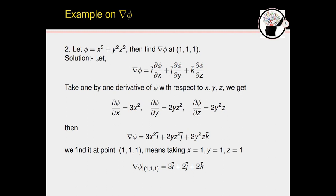Example 1: Let phi = x³ + y²z². Find the gradient of phi, i.e., del(phi), at point (1, 1, 1). We use del(phi) = i(∂phi/∂x) + j(∂phi/∂y) + k(∂phi/∂z). The partial derivative with respect to x gives 3x²; y²z² becomes 0. With respect to y, x³ becomes 0 and the derivative of y² is 2y, while z² remains as is.